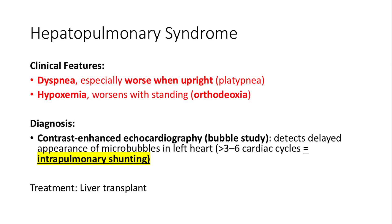Hepatopulmonary syndrome is seen in patients with liver disease and leads to abnormal oxygenation due to intrapulmonary vascular dilations. Clinically, patients present with dyspnea worse in an upright position — known as platypnea — and worsening hypoxemia when standing, referred to as orthodeoxia. These positional symptoms are hallmark features and should raise suspicion for the diagnosis.